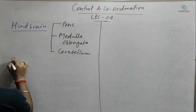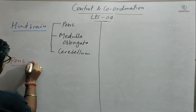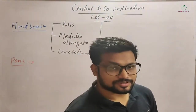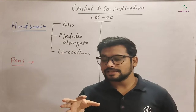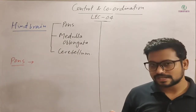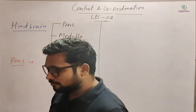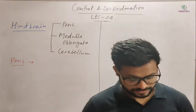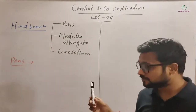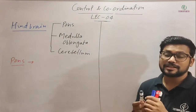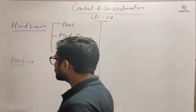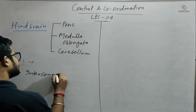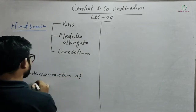First, let's talk about pons. What is the function of pons? Pons is a word of Latin language — pons means bridge. So its primary role is interconnection between the different parts of the brain. Pons connects the different parts of the brain — this is its primary role.